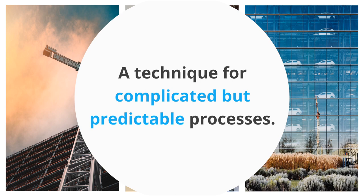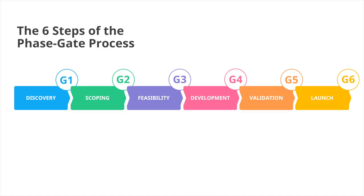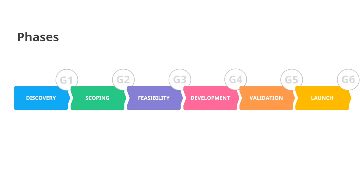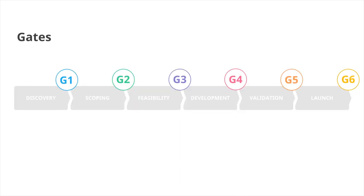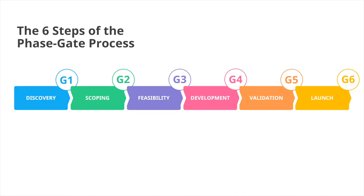Common examples of industries where the process is used include the pharmaceutical sector, construction industry, and electronics manufacturing. The phase gate process is comprised of six distinct steps called phases and six post-phase review steps called gates. While the process can be adapted to different company needs — with fewer or more phases and gates — the traditional approach always starts with a discovery phase and ends with a post-launch review gate.